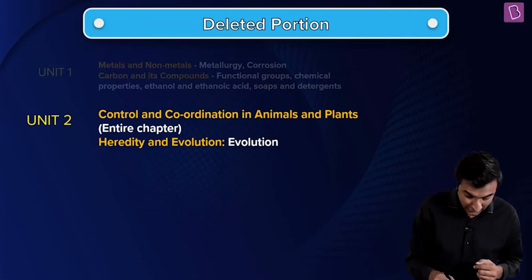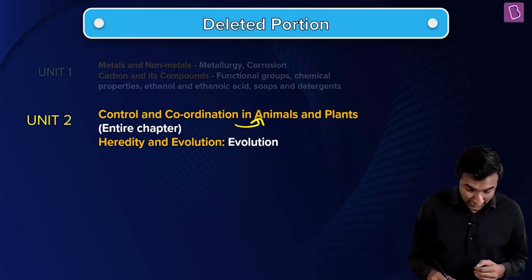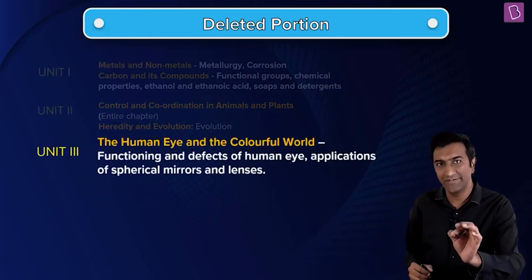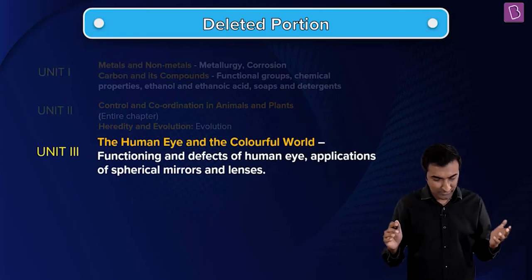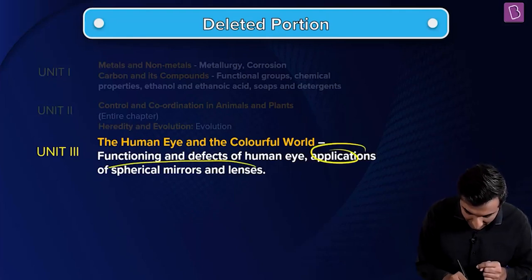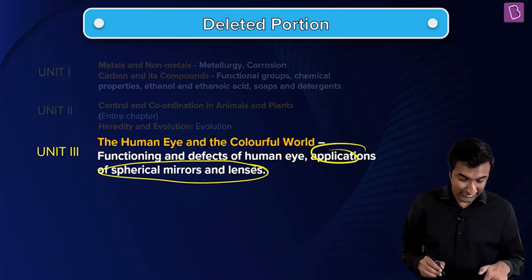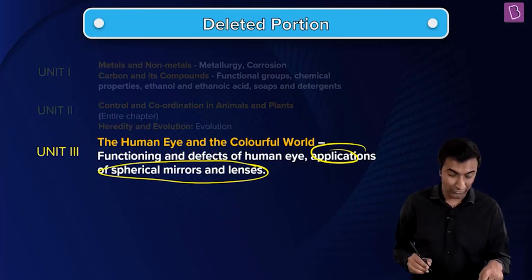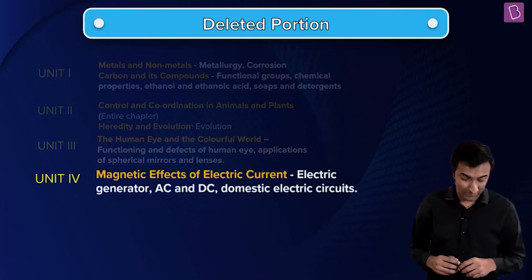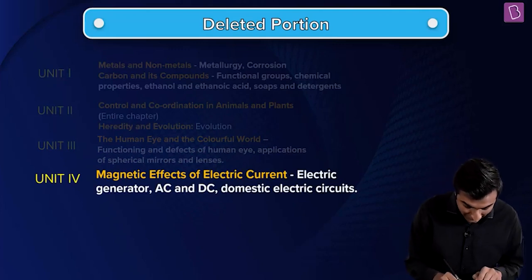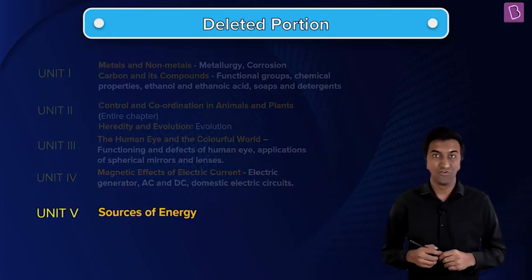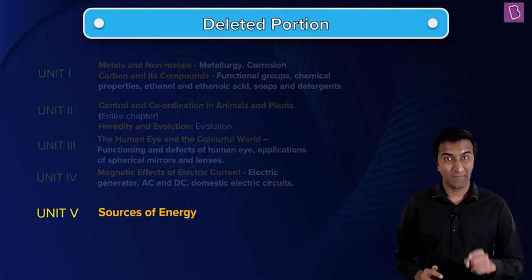In unit two — practically biology — the entire chapter on control and coordination in animals and plants is not there. Evolution has been deleted from heredity and evolution. In units three and four, which are basically physics, the whole second half of the human eye chapter is gone — functioning and defects, spherical mirrors and lenses applications. The next unit doesn't have electric generators, AC and DC, and domestic electric circuits. And the last part: we don't have sources of energy either.